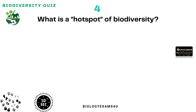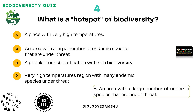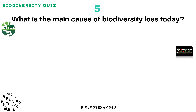Question number four: What is a hotspot of biodiversity? Option A: A place with very high temperatures. Option B: An area with a large number of endemic species that are under threat. Option C: A popular tourist destination with rich biodiversity. Option D: A very high temperature region with many endemic species under threat. The correct answer is: a hotspot is an area with a large number of endemic species that are under threat.